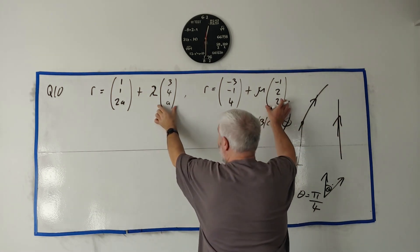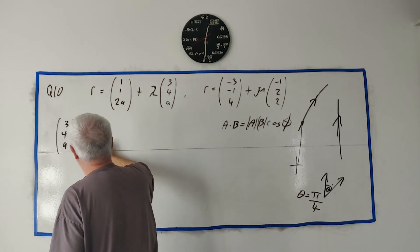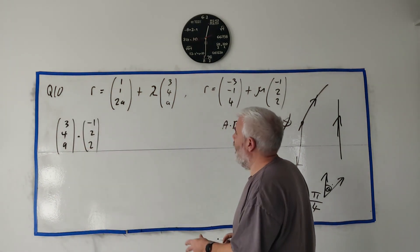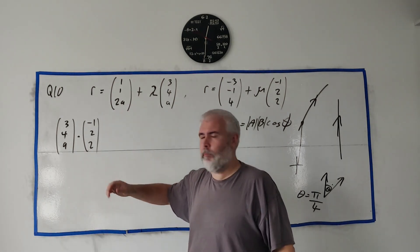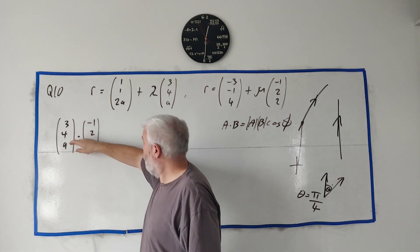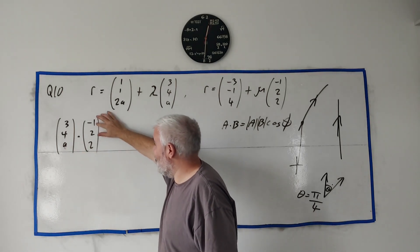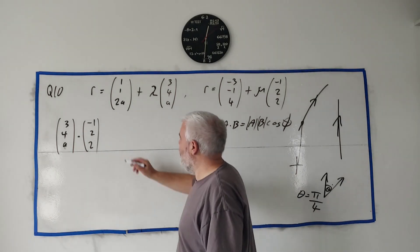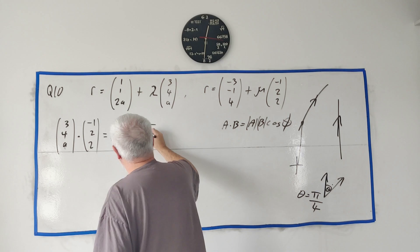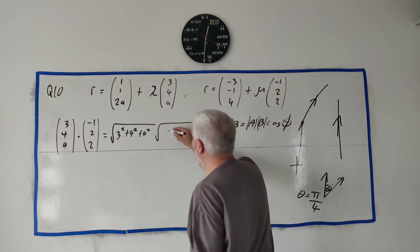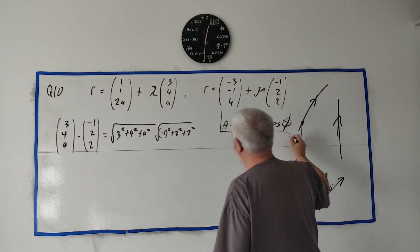That's this guy here, these two, so we can just get (3, 4, a) dot product with (-1, 2, 2). I'm writing the vectors like this—they gave them to us in unit form and I'm writing them in column form. This is 3i + 4j + a k, and this is -i + 2j + 2k. This equals the length of this vector which is √(3² + 4² + a²) multiplied by the length of this vector which is √((-1)² + 2² + 2²) multiplied by cosine of the angle between them.